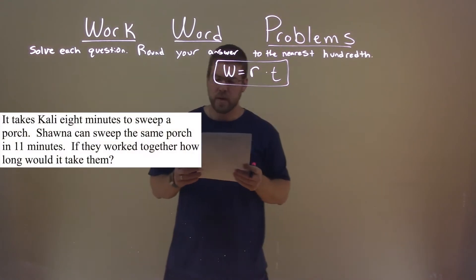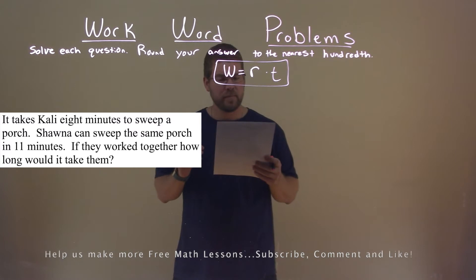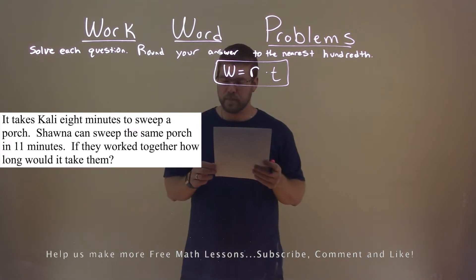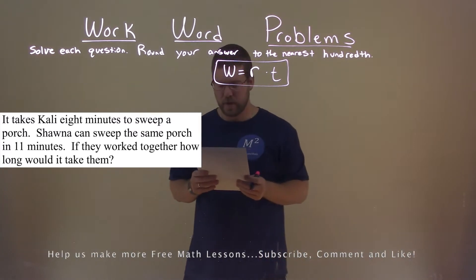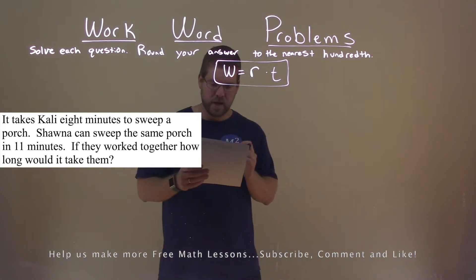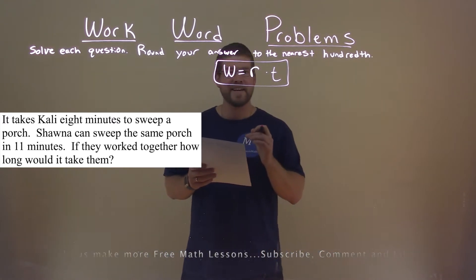We're given this problem right here. It takes Kali eight minutes to sweep a porch. Shauna can sweep the same porch in 11 minutes. If they worked together, how long would it take them?